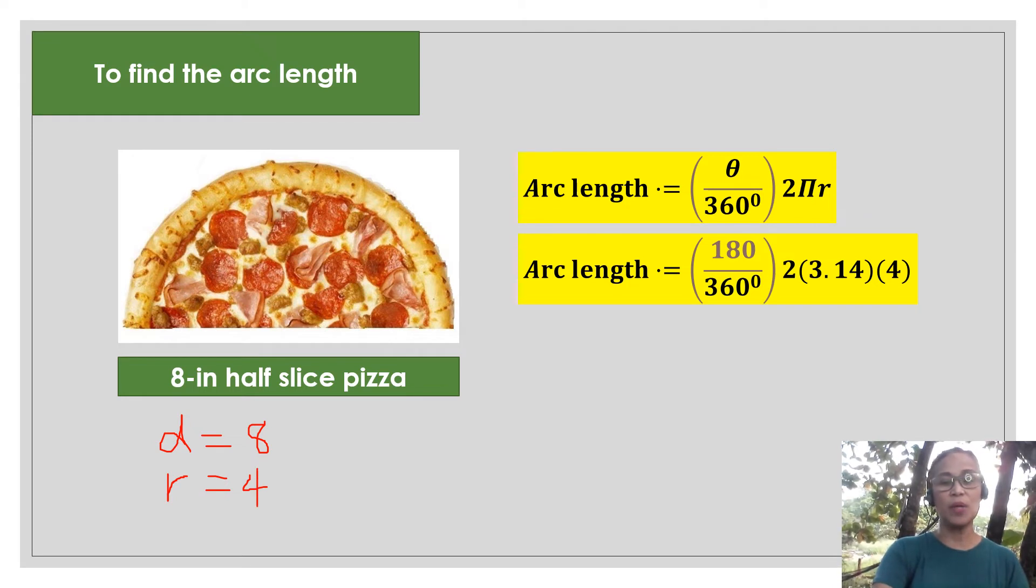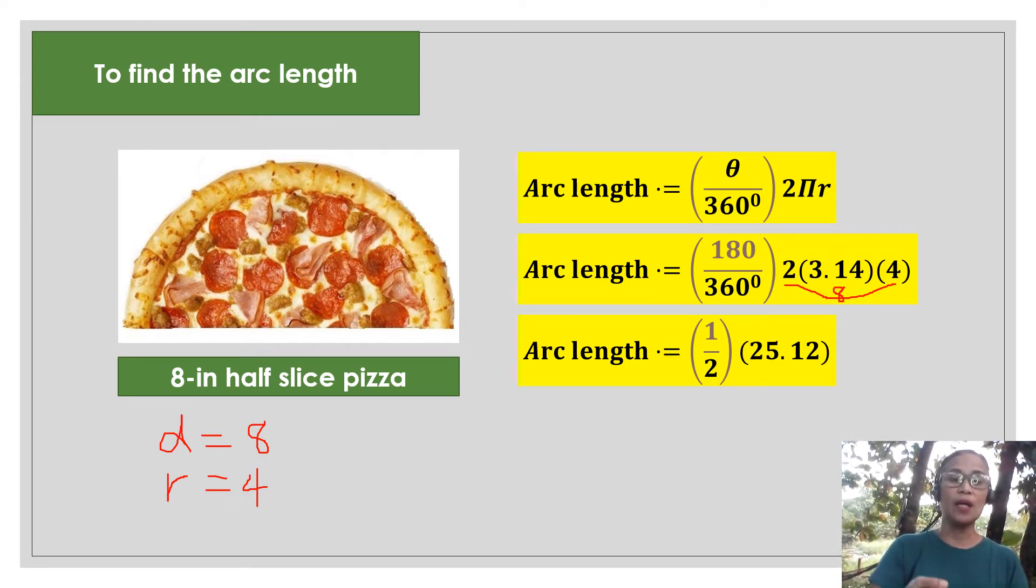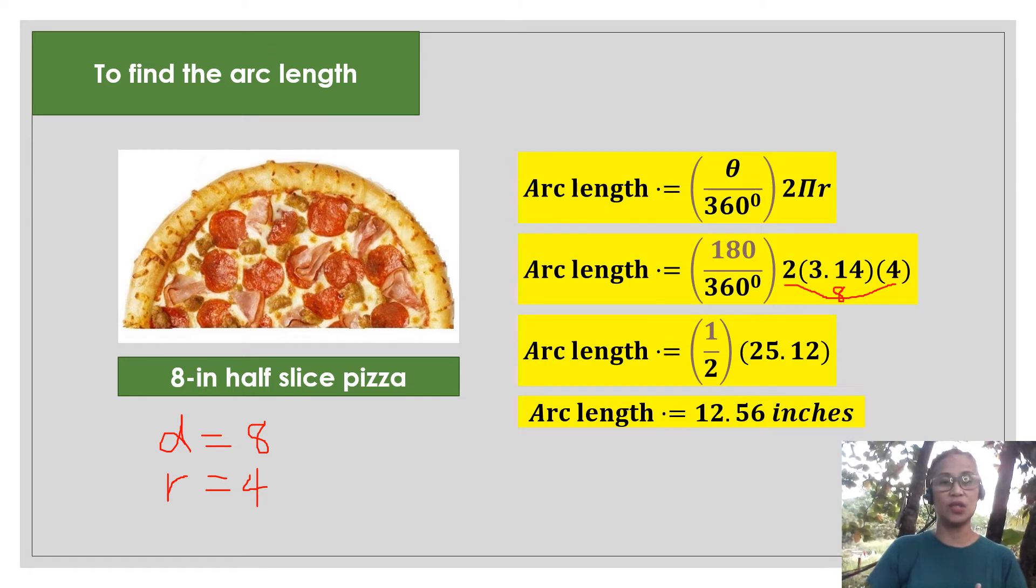Actually, we can verify it here since 2 multiplied to 4 gives you a value of 8. So it's the same as the formula pi times d. So we are going to simplify 180 over 360, which is one half. That's actually the part that you are taking in 25.12, is the circumference of the whole pizza. But you need only half of that. So multiplying it by one half, we get 12.56 inches. So that is actually the arc length of the half slice pizza.